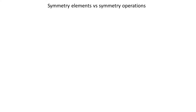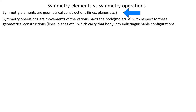Next we want to be clear about the difference between symmetry operations and symmetry elements. Symmetry elements are geometrical constructions — for instance an axis of rotation, planes of reflection and so on — whereas symmetry operations are the actions of reflecting, rotating, etc. that bring a molecule to an equivalent configuration.